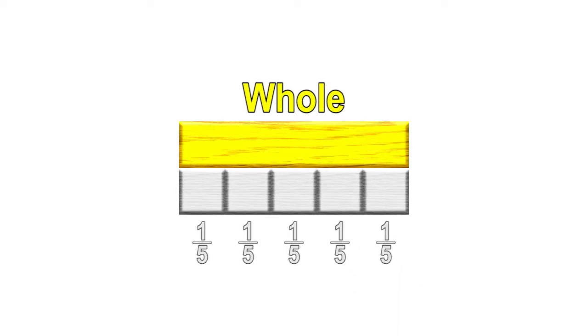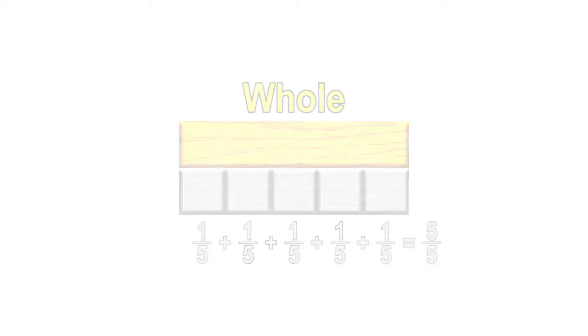In the first example, the yellow rod represents the whole. Each white rod represents one-fifth of the whole. Five one-fifth rods are needed to make the whole, represented by the fraction five-fifths. Five-fifths is the total length of five copies of the unit fraction one-fifth.